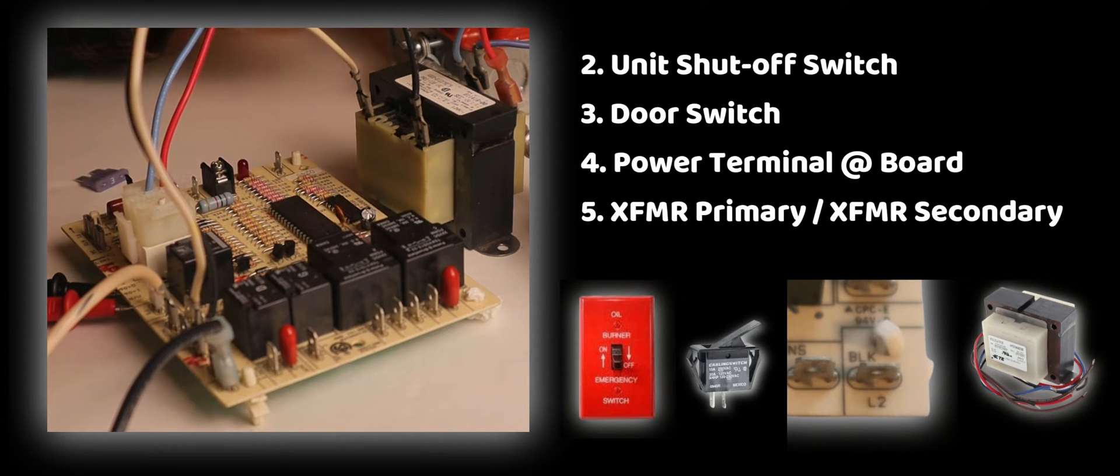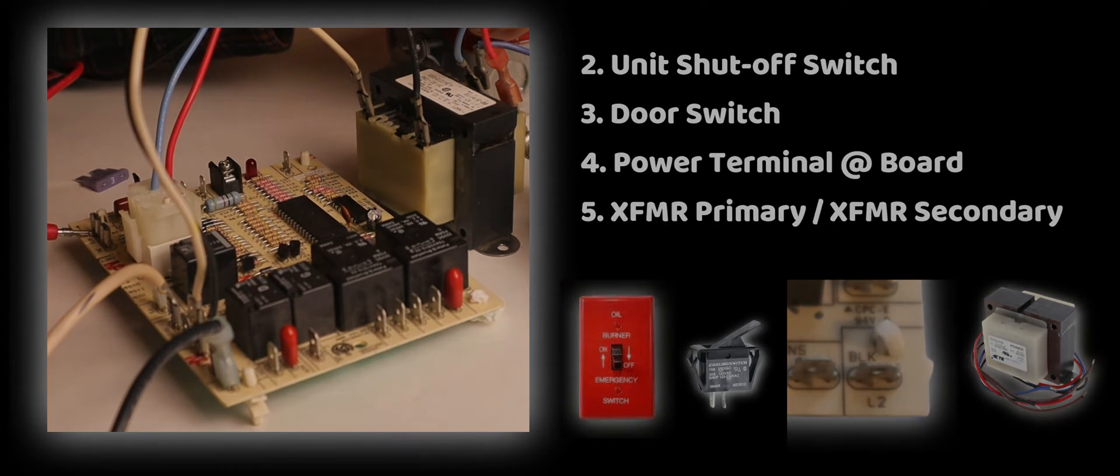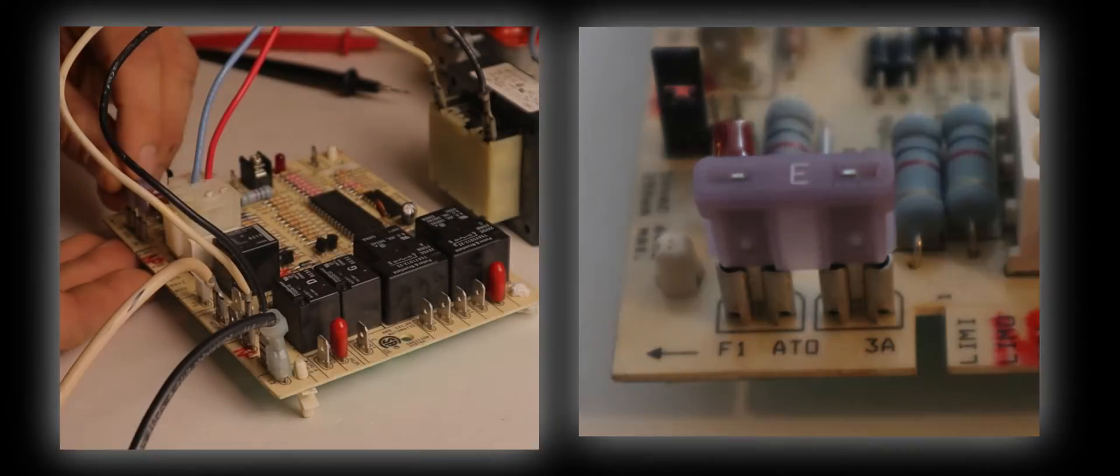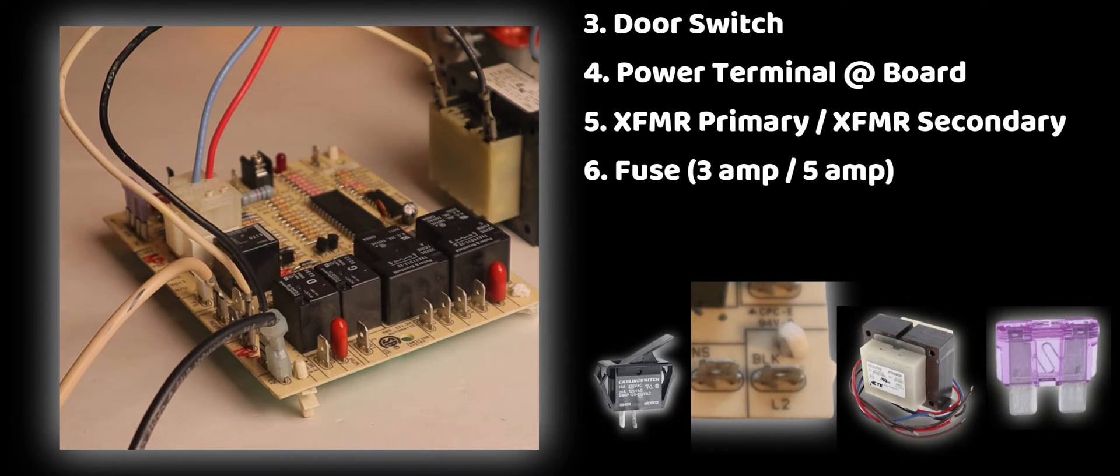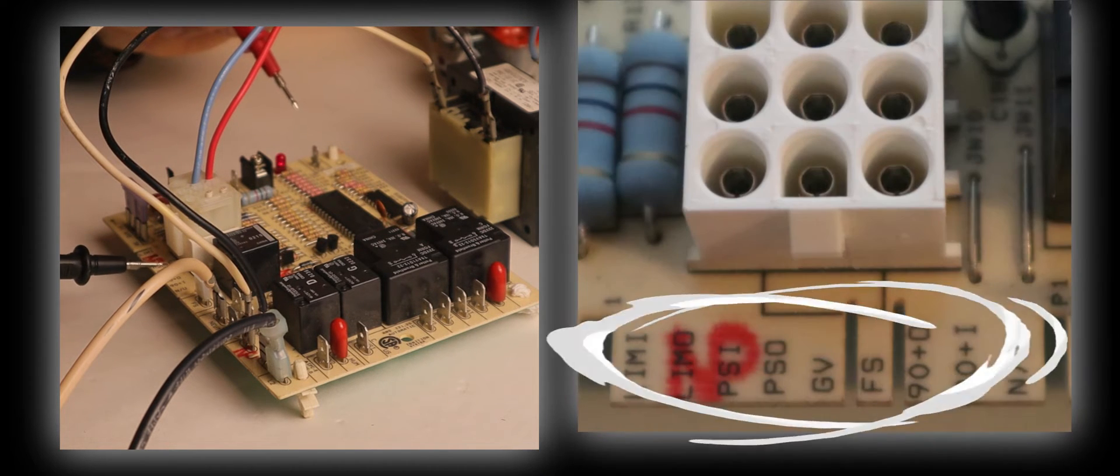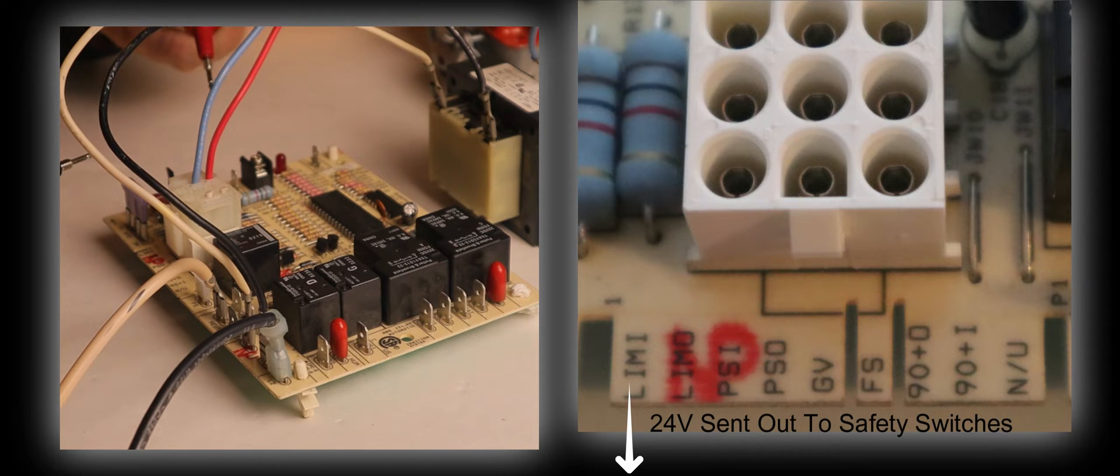I'm now going to put power on it and the only place I have power now is on the inlet to where the three or five amp fuse goes into the control board. I have my power back off, I'm going to put my three amp fuse back into the board. I'm going to restore power and the one place I have power now from the fuse is in a section of the board labeled L-I-M-I, which means limit input. That is a 24 volt signal that goes out to limit switches.